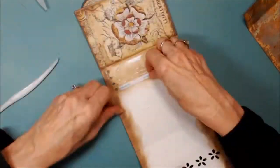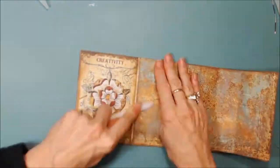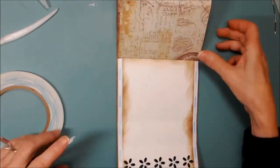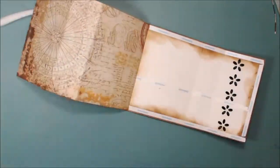So now adhere your paper to the inside of the mini. I use score tape and a little glue, just because I like the way it holds the paper in the folds, but you can use whatever you like.